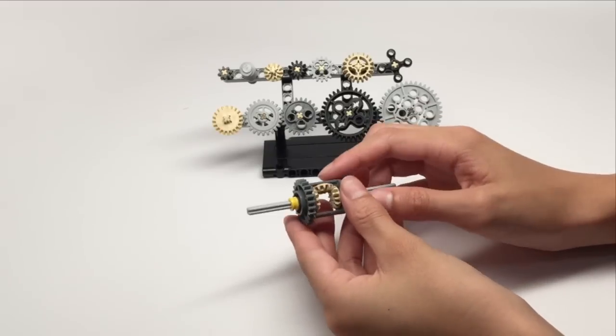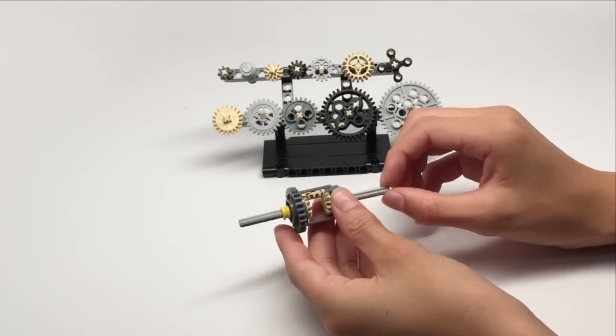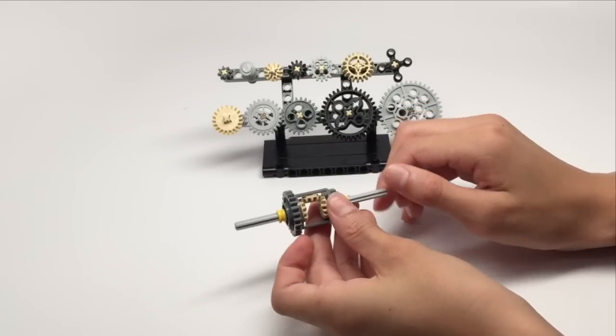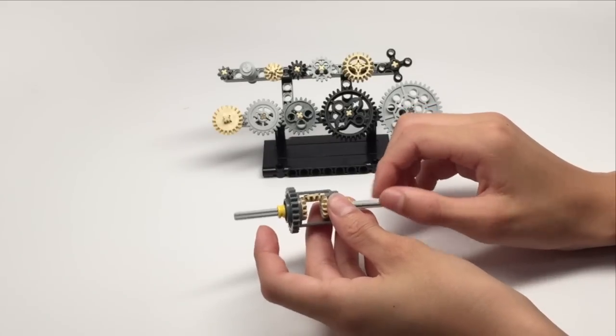For example, this gearbox will transfer motion in the opposite direction. By spinning forward here, it spins backward, and by spinning backward, this axle spins forward here.